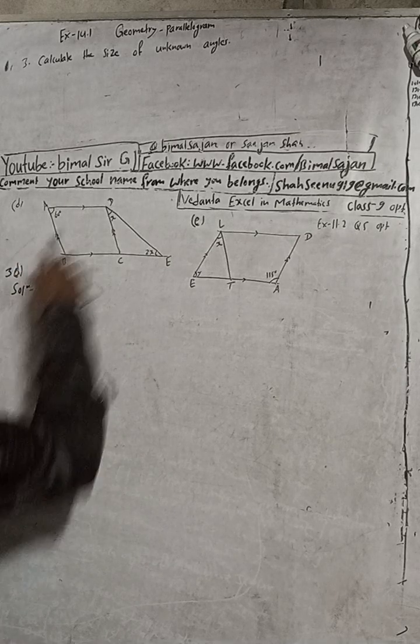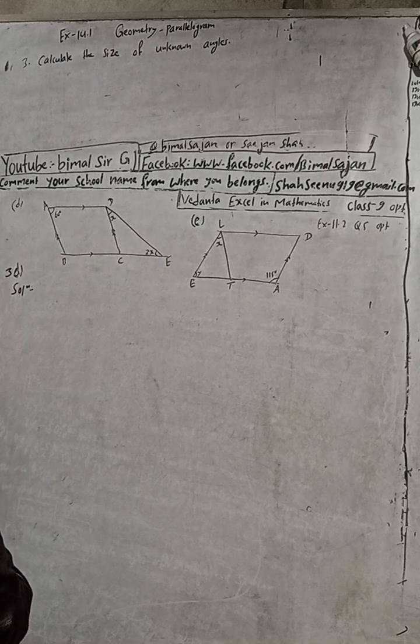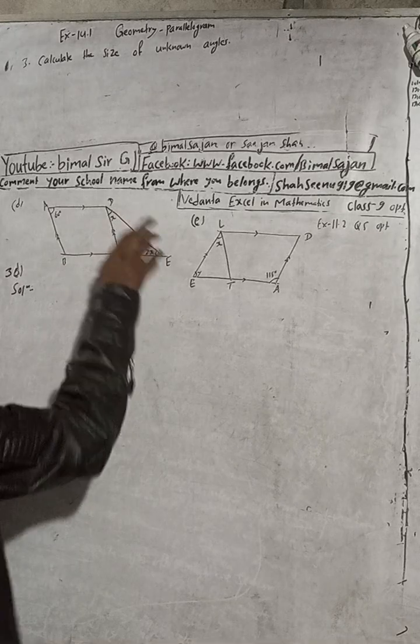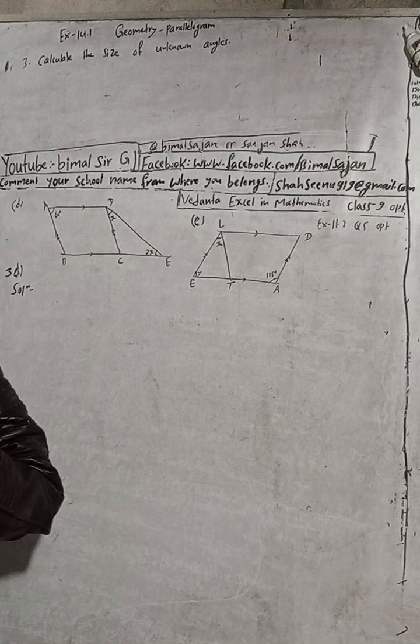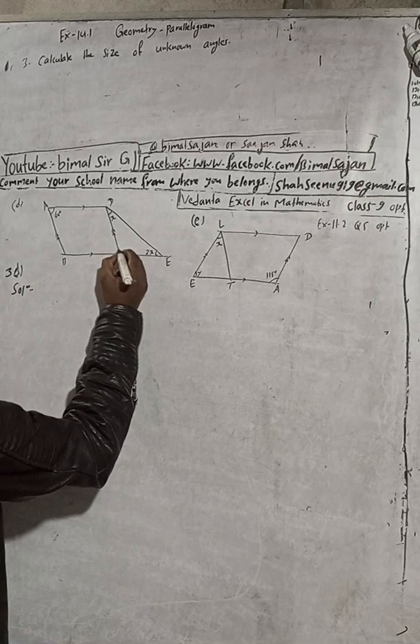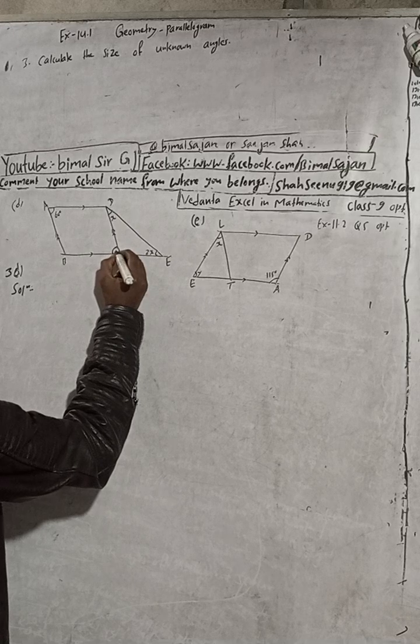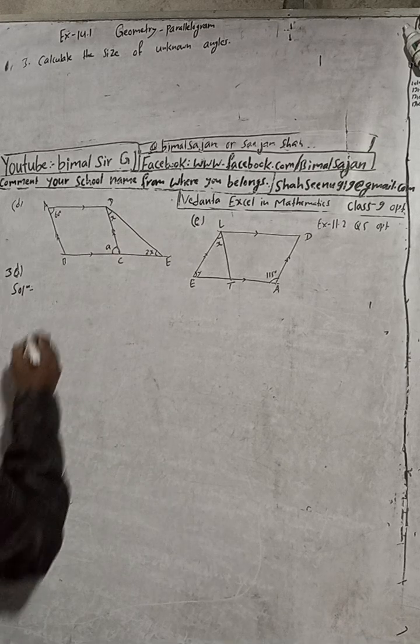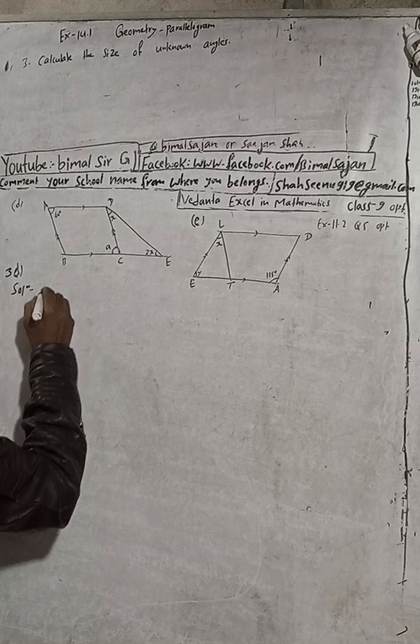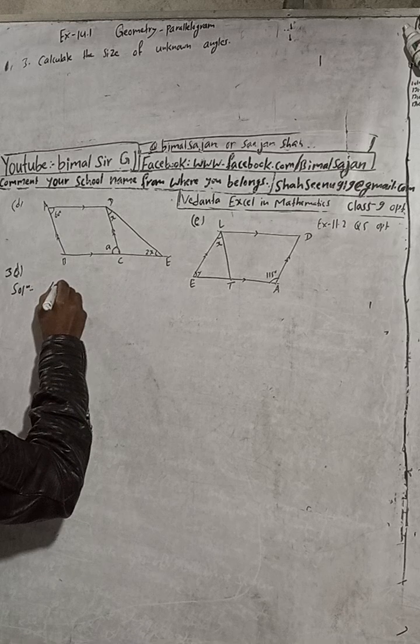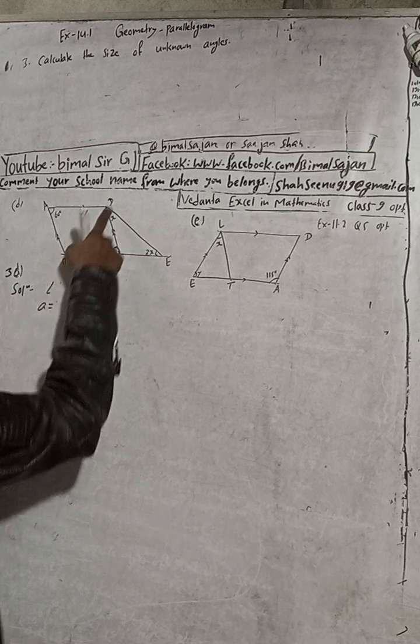We have to find this and this and this. So for this question we can see that this and this relation is there. Then if I suppose, let this be a degrees, okay this is a. Then can I write a is equal to... okay, here I will write, let angle DCB, let angle DCB this angle is equal to a.